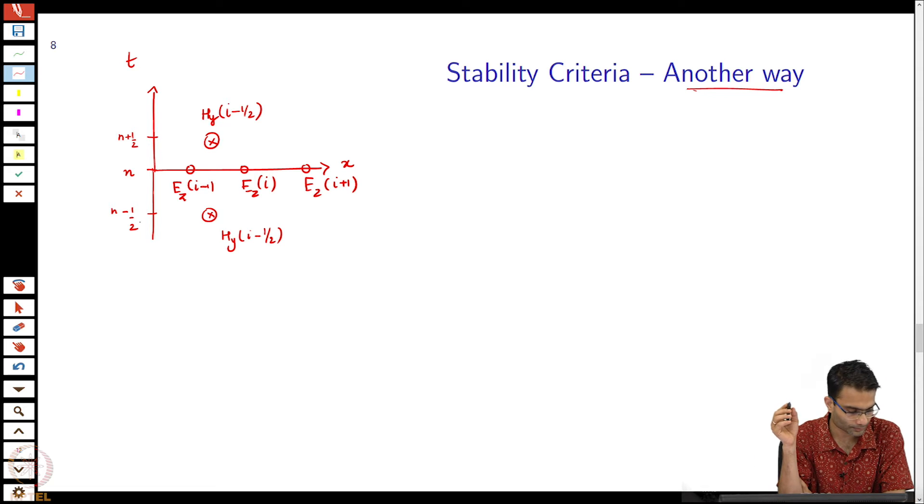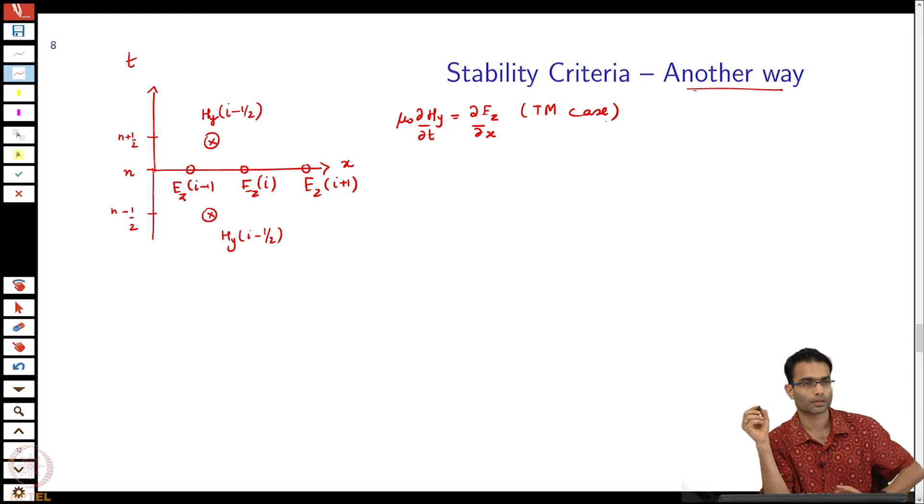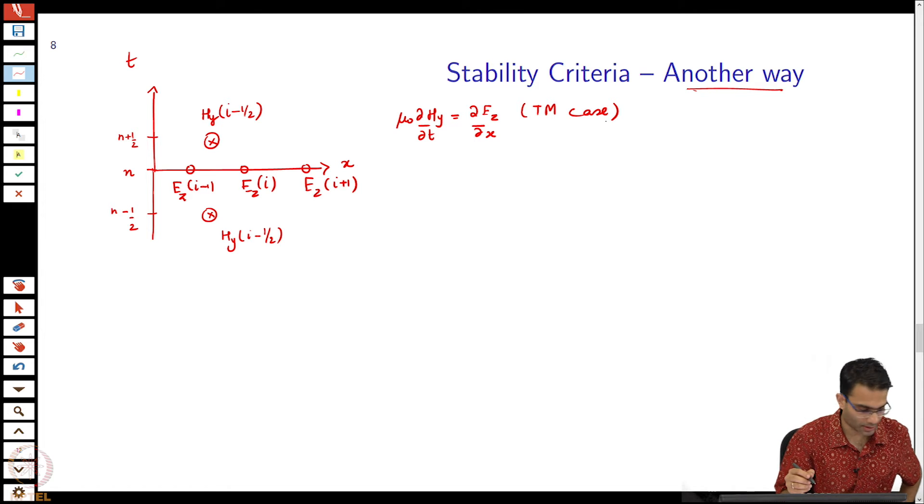The differential equation for this was mu naught dHy/dt is equal to dEz/dx, this is TM case. This is the equation that I had: Ez, Hx, Hy. The equation for Hy was the following. This is my delta x and delta t is this whole thing over here. Let us write it in stepwise form.